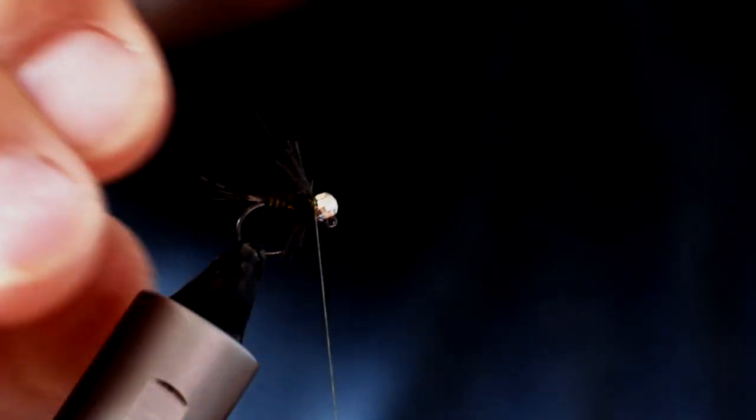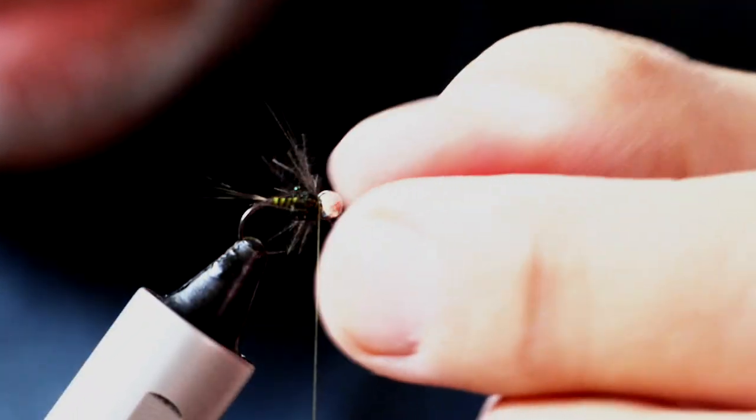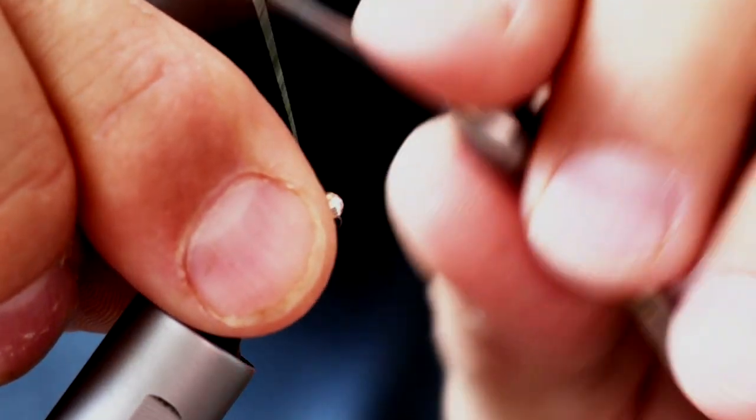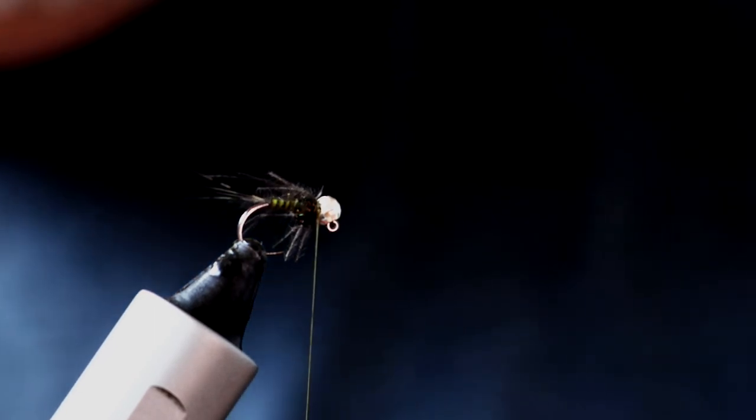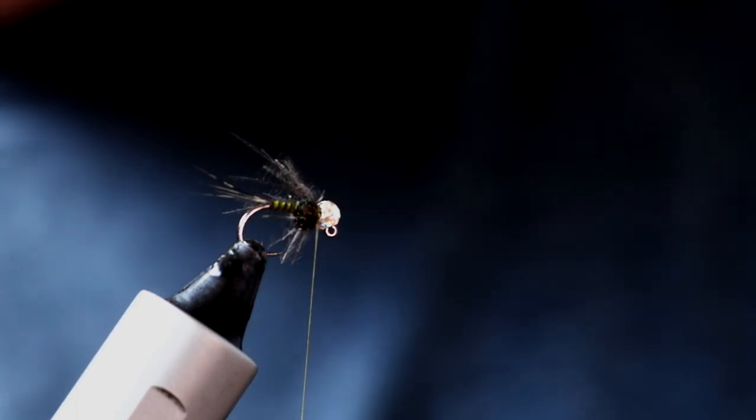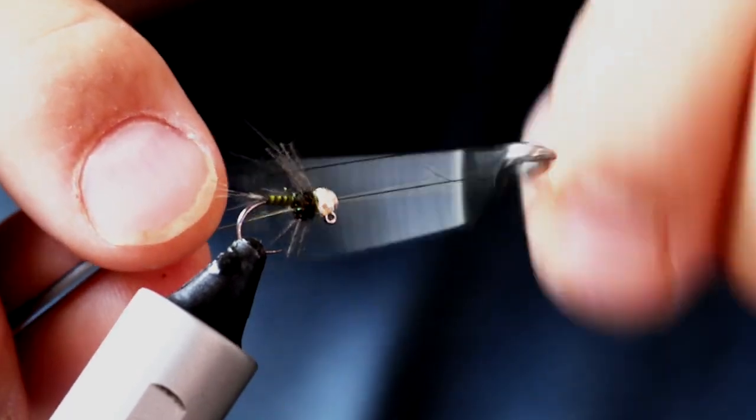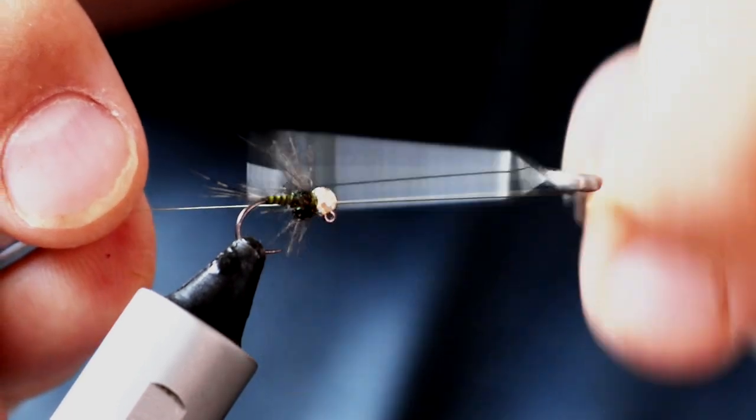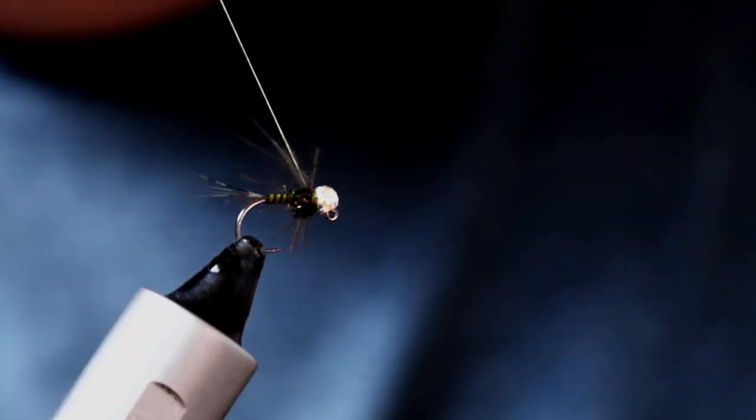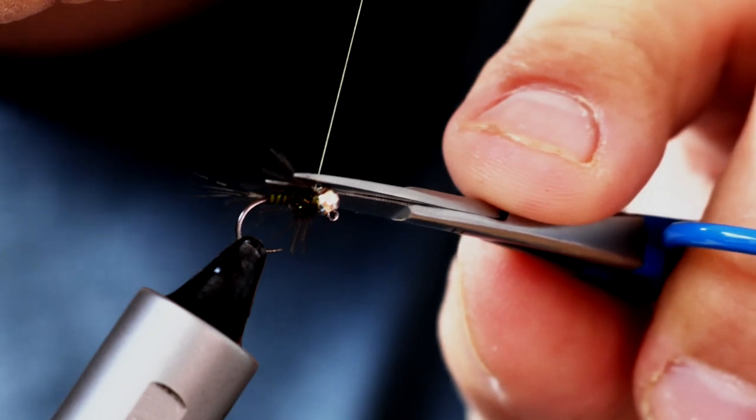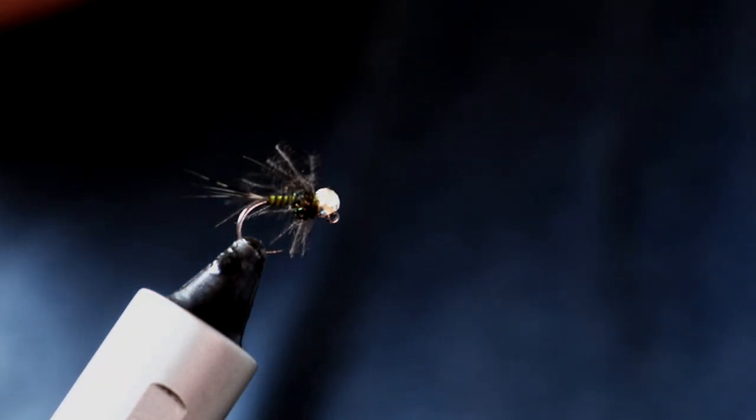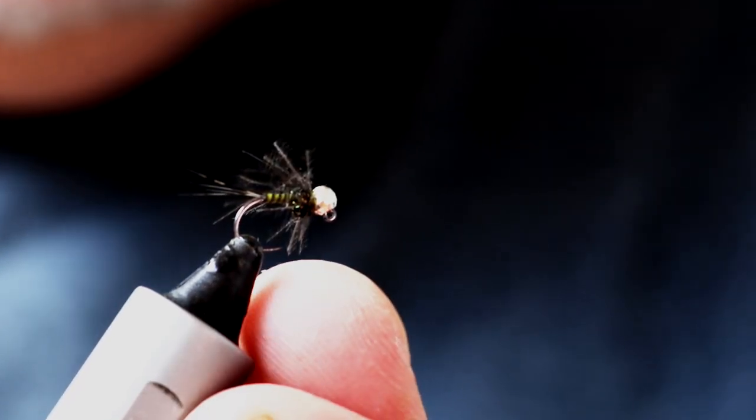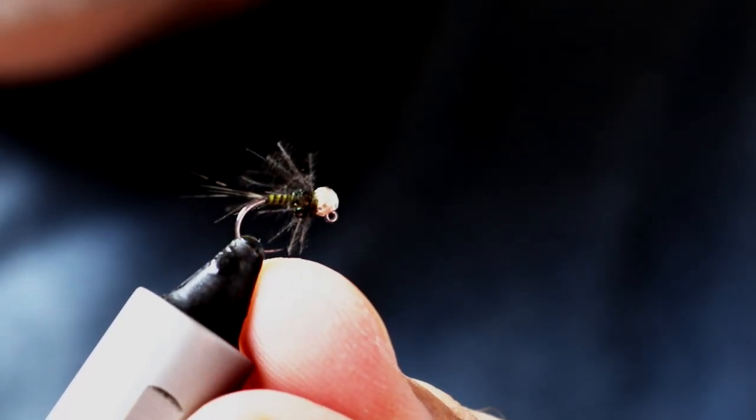There you go, you get that nice little sort of pingy effect where those fibers come out. And of course you'll get lots of movement from those fibers as this fly bounces through the water column. Now I'm going to stick in a whip finish here because this is basically the finished fly. You can fish it exactly like this, and I have in fact done so. I mean it's just a really lovely profile, isn't it? Look, it's just absolutely perfect.